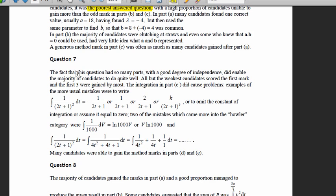The fact that this question had so many parts, with a good degree of independence, did enable the majority of candidates to do quite well. All but the weakest, all but the weakest means there were some people who couldn't do this sum. And the first three were gained by most, the derivative, people could do it, the integration in part c did cause problems. So what they were saying, some people couldn't do this.